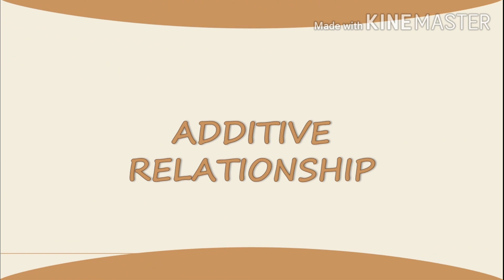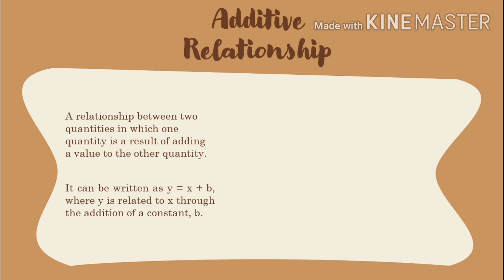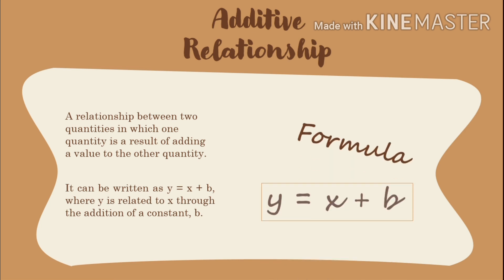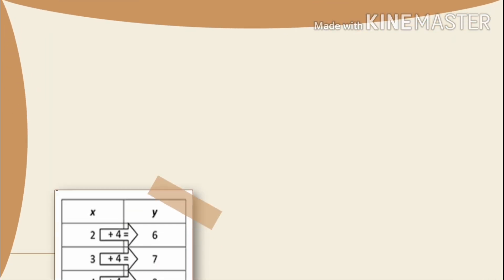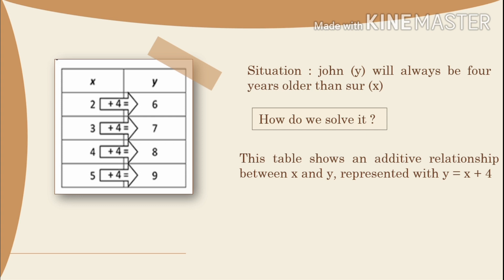Additive Relationship. This is a relationship between two quantities in which one quantity is a result of adding a value to the other quantity. It can be written as y equals x plus b, where y is related to x from the addition of a constant b. Formula: y equals x plus b. Example: in a situation, you, represented as y, will always be four years older than your friend, represented as x. This table shows an additive relationship between x and y, expressed as y equals x plus 4.